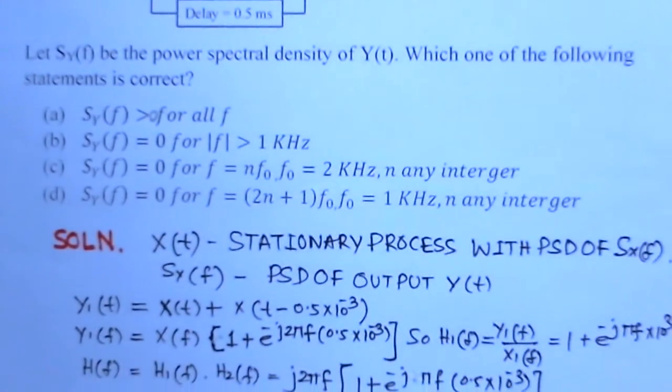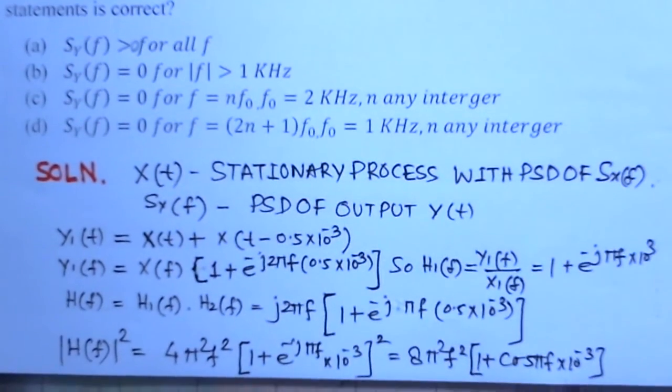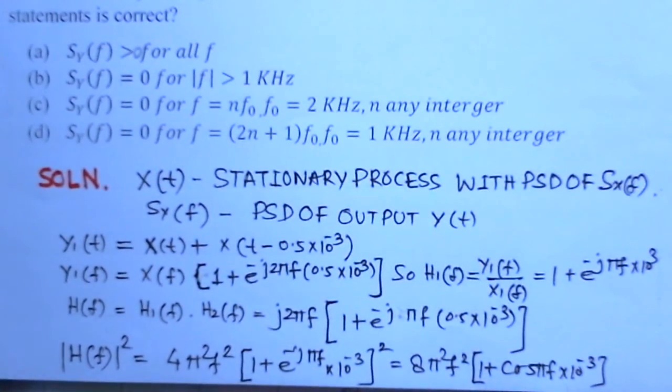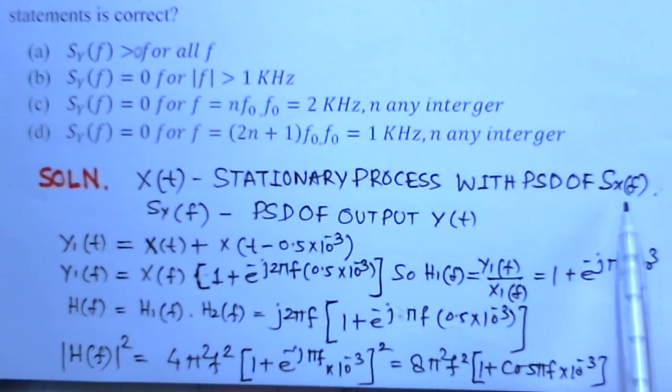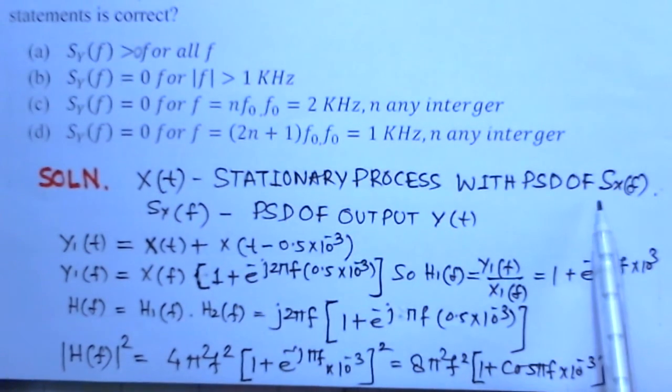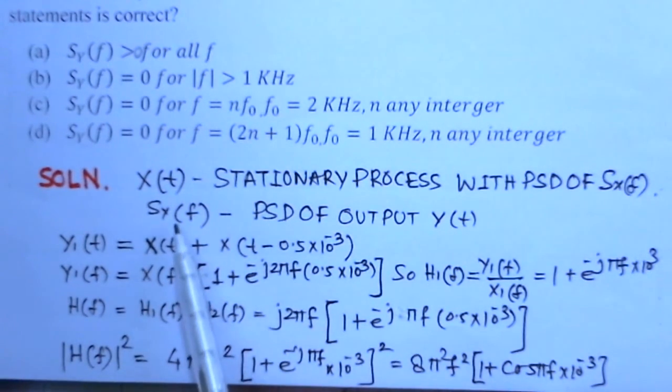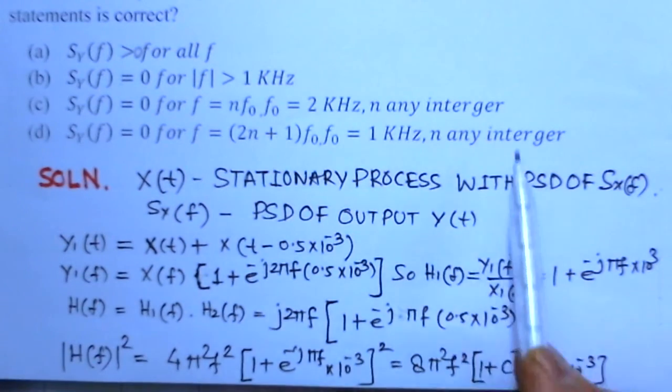X(t) is said to be a stationary process with power spectral density SX(f) which is given to be greater than 0 for all f, and SY(f) is the power spectral density of the output Y(t).